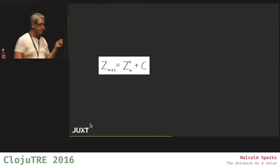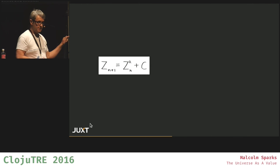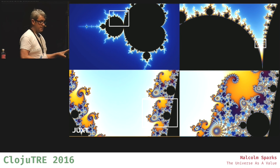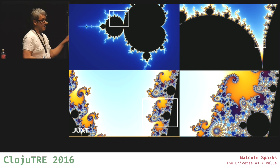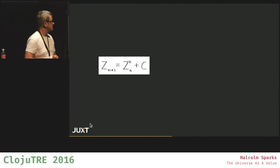But there's one really compelling piece of evidence that really gets me, which is this equation here. Does anyone know what this produces? It produces that. You've got to be joking, right? If that's not an Easter egg, I don't know what is. It's infinite complexity from a simple equation.